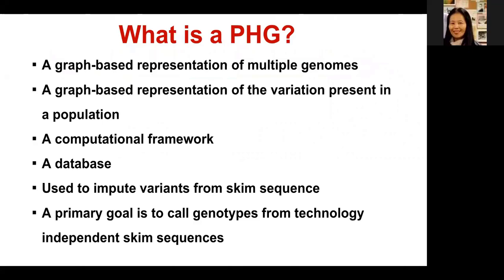The PHG is a representation of multiple genomes — it's like a pan genome. It represents the variation present in a complete population or even a complete species. It's a computational framework and database used to impute variants from low-coverage sequences. The primary goal is to call genotypes from technology-independent sequences. The beauty of PHG is it can take a wide range of sequencing read lengths as input — 150 base pairs, 80 base pairs, or even a few kilobases.